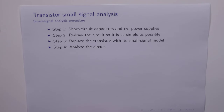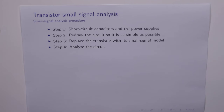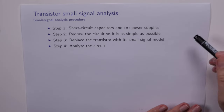We'd now like to use our small signal model for the transistor to analyze some actual circuits. There are a few steps we have to follow. The first step when analyzing a circuit is to short circuit the capacitors and the DC power supplies. Our coupling capacitors are chosen so that they provide DC isolation — they do not allow DC to flow from one circuit to another. At the frequencies we're interested in amplifying, the impedance of those capacitors is very small, so we replace them with short circuits. We also know that a DC power supply looks like an infinite capacitor, so we short that out as well.